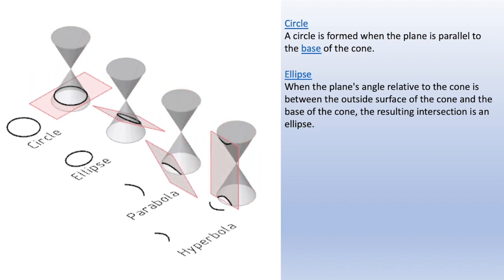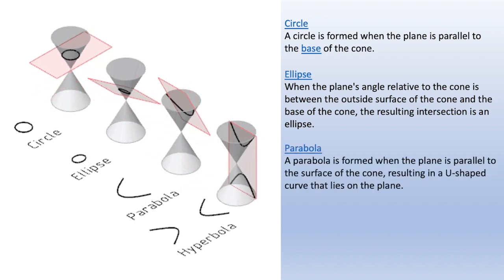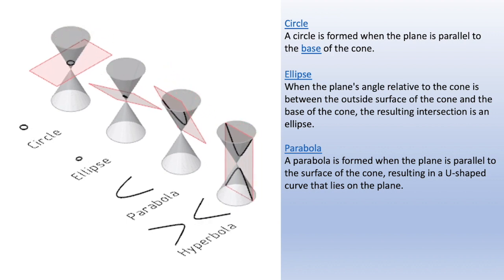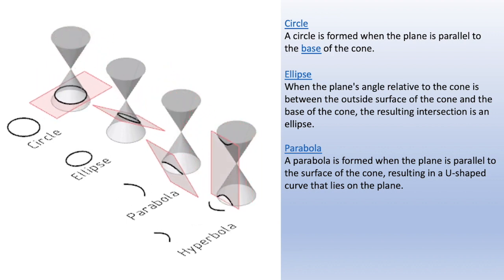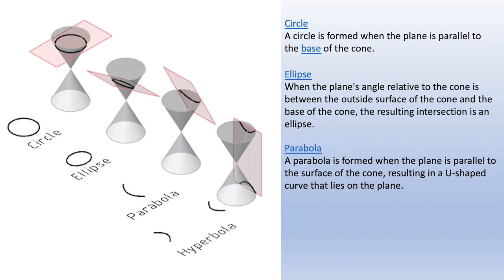And we have a parabola. A parabola is formed when the plane is parallel to the surface of the cone, resulting in a U-shaped curve that lies on the plane.